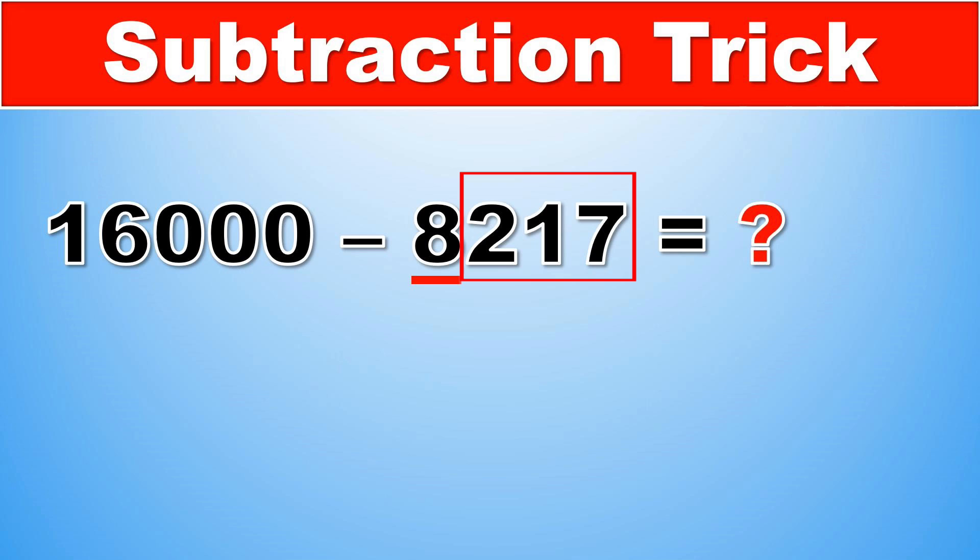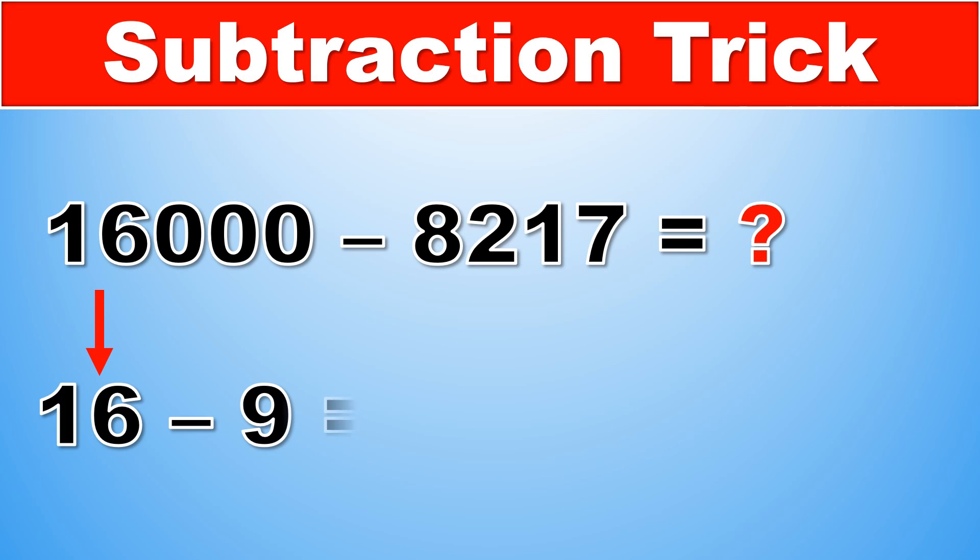Let's take a look at the first part. Again, the strategy is to add 1 to this part of the number, and then subtract it from the other part. In this case, we're looking at 8 plus 1, which is 9, and then we have to subtract this from the part of the other number, which is 16. 16 minus 9 is equal to 7, and that is the first part of the answer.